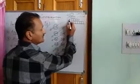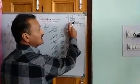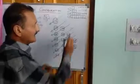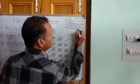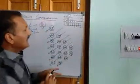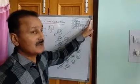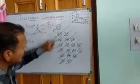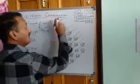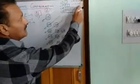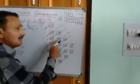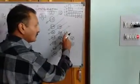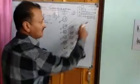Similarly, as far as your D subshell is concerned, it has five orbitals. Each orbital contains a maximum of two electrons, so you will have two times five equals ten electrons. So whether it is 3d, 4d, 5d, or 6d, they can all accommodate a maximum of ten electrons.